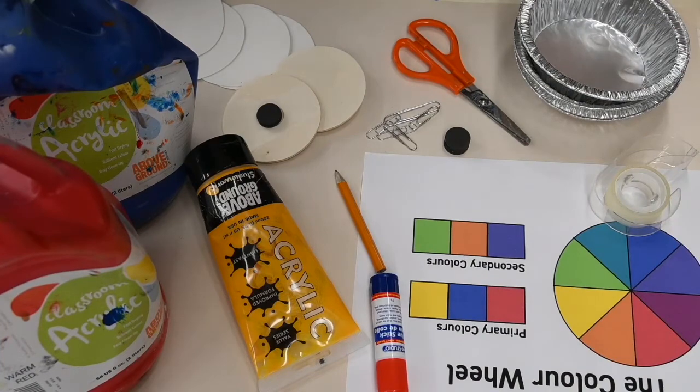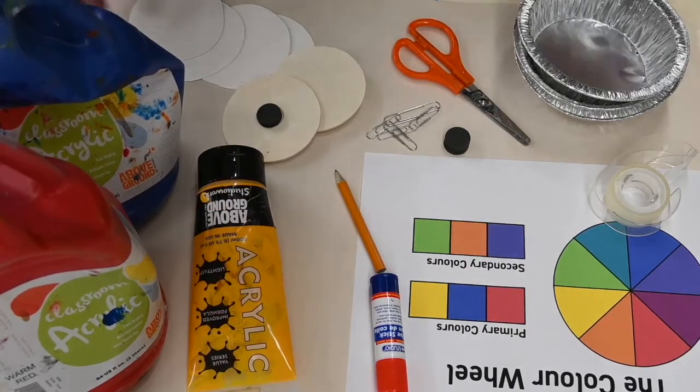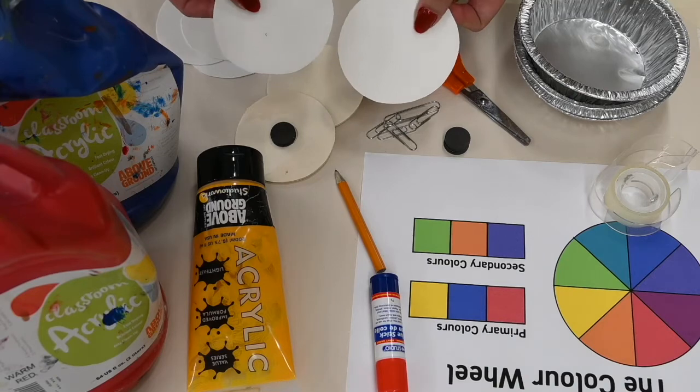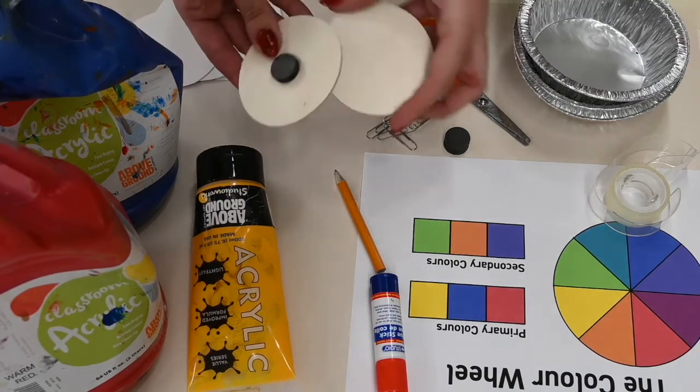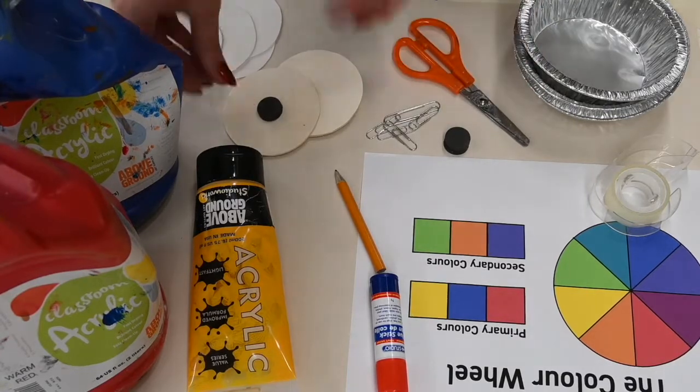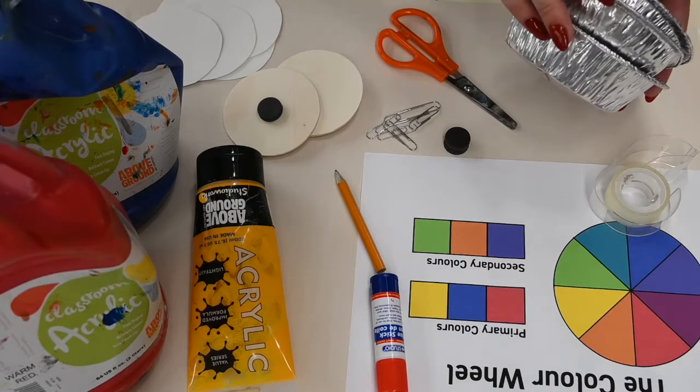So for this project we will need a few supplies. We're going to need our three primary colors in acrylic paint. We'll need five round sheets of watercolor paper, two wooden rounds with the magnets attached to the back. We'll also need a pair of safety scissors, three tart trays.